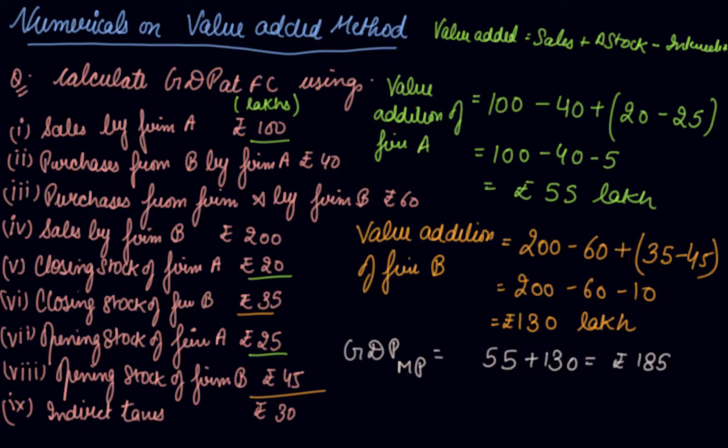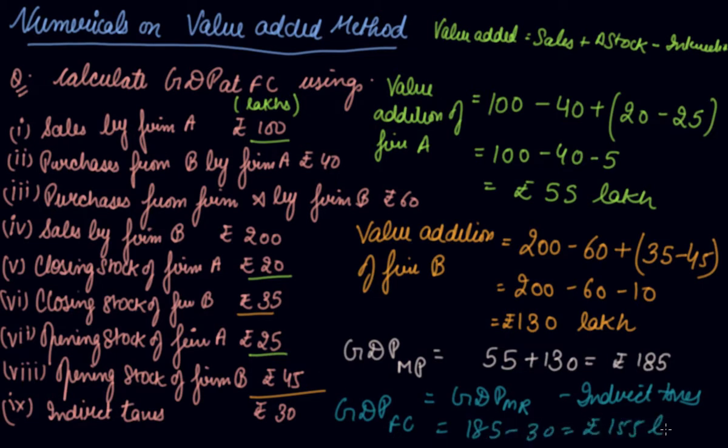Now, they'll ask you to calculate GDP at factor cost. GDP at factor cost, GDP same from market price to factor cost you have to go. What you do, you will subtract the indirect taxes which is your Rs. 185-30 is Rs. 155 lakh.